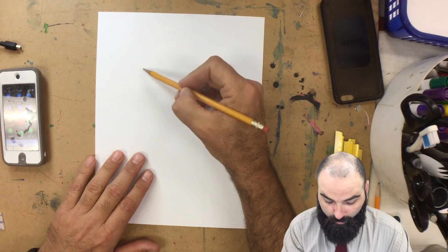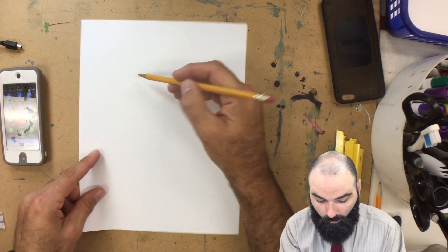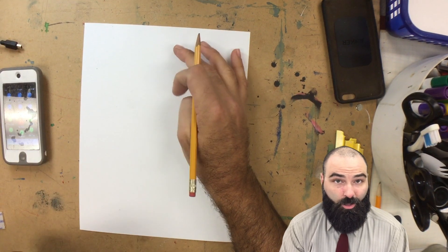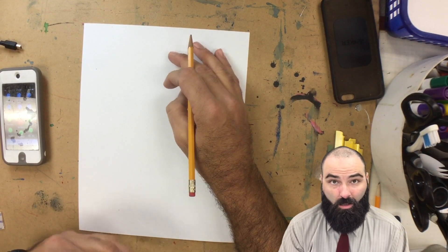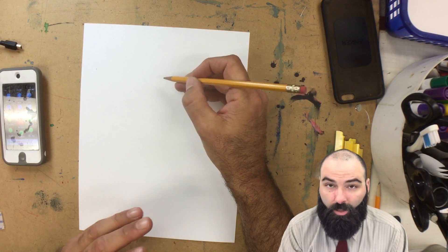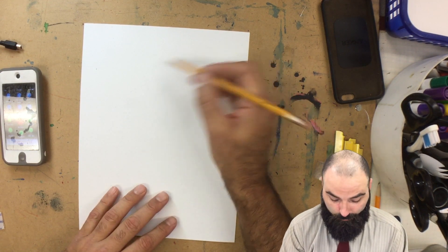We're going to start towards the top of the paper and we're just going to focus on drawing the head. We're not going to draw the body like you saw in a lot of the Cubist portraits that I showed you at the beginning of class. We're just going to draw the head to make things a little bit easier.